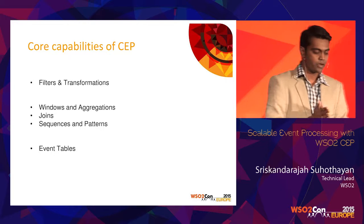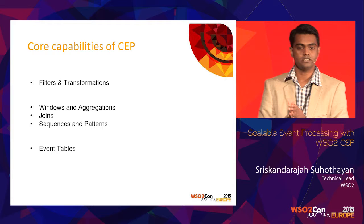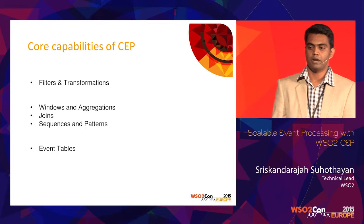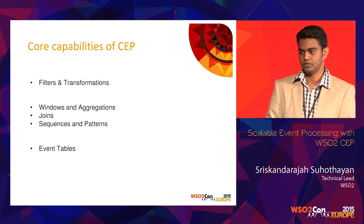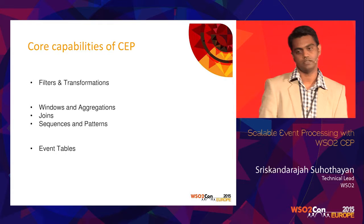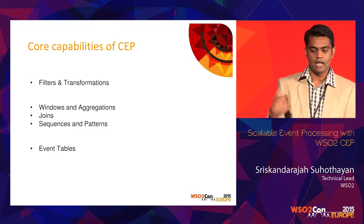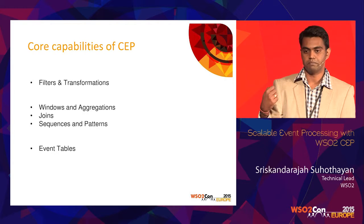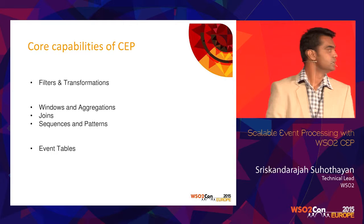The core capabilities of CEP include filters and transformations as basic operations. We can also do windows and aggregation — for example, calculate the last five-minute average and make a decision on that. We can also join streams: imagine a purchase stream and a payment stream — has every purchase got an appropriate payment? We can join those streams to detect anomalies and notify immediately.